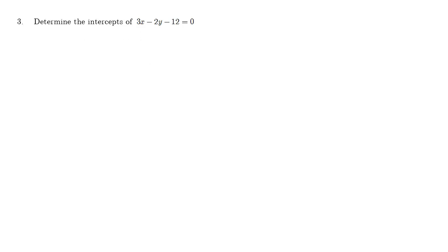Question number three. Determine the intercepts of this line here. Now remember, to find the x-intercept, we set y equals zero, the opposite variable to zero. So I'm looking at this, and I'm going to say three x minus two times zero. That's the y value. Minus twelve equals zero. What we're trying to do is we're trying to find the x-intercept.